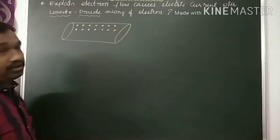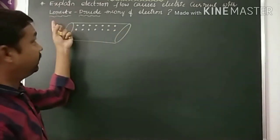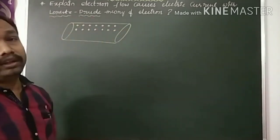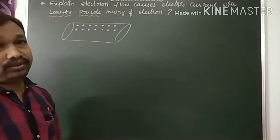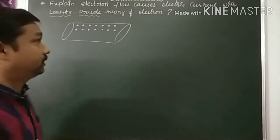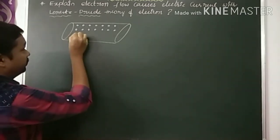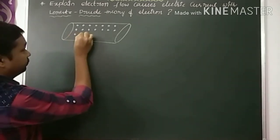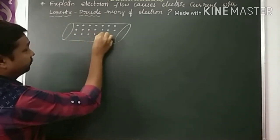This arrangement is called a lattice. This information was given by Lorentz-Drude in the 19th century. All the protons are fixed in their particular position.